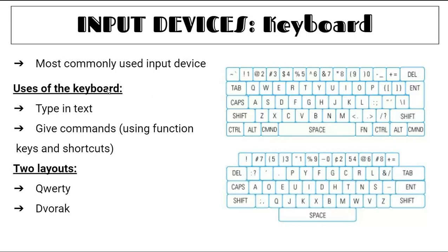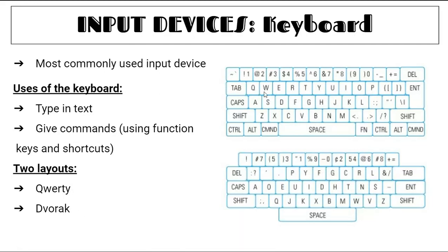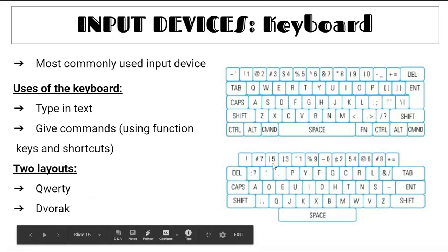The keyboard is the most commonly used input device — used to type text and give commands using function keys and shortcuts like Ctrl+X for Cut, Ctrl+C for Copy, Ctrl+V for Paste. There are two layouts: QWERTY — the most commonly used, based on the first row of keys — and Dvorak, where things are rearranged, not used as widely.